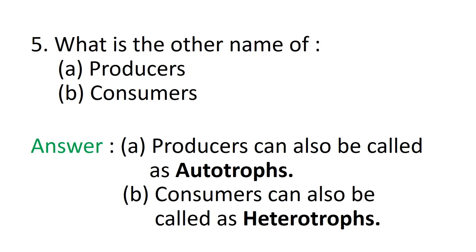A) Producers can also be called as autotrophs. You all know producers are the ones that make their own food. In the word autotrophs, auto means self and trophs mean the source from which food or nutrients are acquired. So, the species that make or produce their own food are called producers or autotrophs.